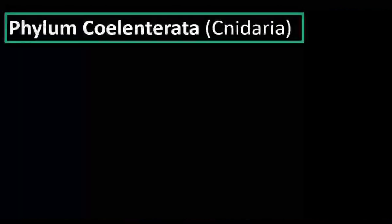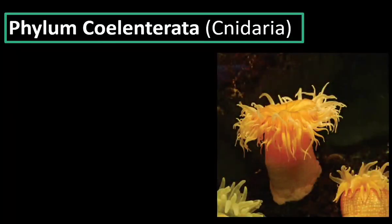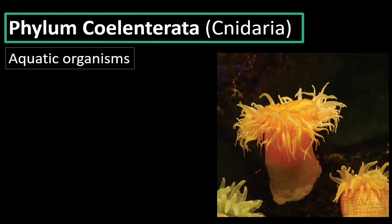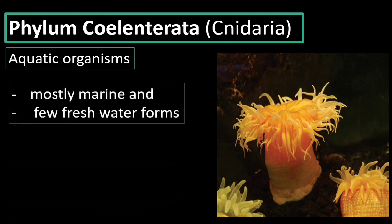Now let us move on to the phylum Coelenterata, also called Cylinderata — the old name. The new name for the phylum is Cnidaria. An example is sea anemone. These animals live in water; they are multicellular aquatic organisms. Most are marine, and a few live in freshwater.